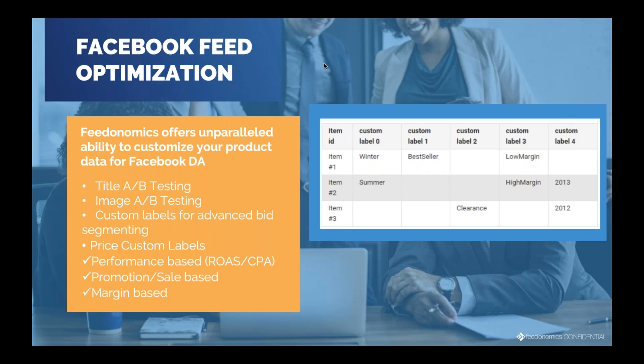Some of the things we're able to do include title A/B testing and image A/B testing. Is it better to have the title 'Nike Air Jordan Shoes' or 'Air Jordan Shoes by Nike'? You might have a hunch, but you can actually test it. We can also do image A/B testing — you might have alternative image links and want to test which image is most attractive to users in their Facebook newsfeed. That's something we can help you set up as well.